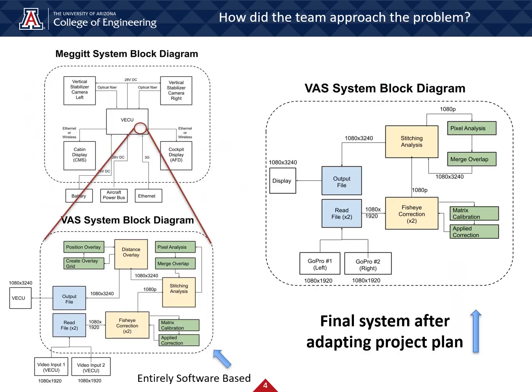When looking at how our team approached the problem, looking at the evolution of our system block diagram highlights our approach. First, it was necessary for our team to understand the system Megit used since we were tasked with writing a software package specifically for their system. Research into their system manuals led to the development of a system block diagram for Megit's system. We then developed a block diagram for the software which would exist within Megit's processor aboard the aircraft, named the VECU. Notably, this block diagram contained no hardware and was entirely software based. Once our project scope changed, we adapted our system block diagram to a few cameras and a display, as well as modified our software modules to our adaptive system requirements. Our overall approach was to use the two GoPros to take sample footage, calibrate the camera's intrinsic distortion such that its video can be corrected, and finally analyze the overlapping field of view for similar points in order to stitch the two videos together.